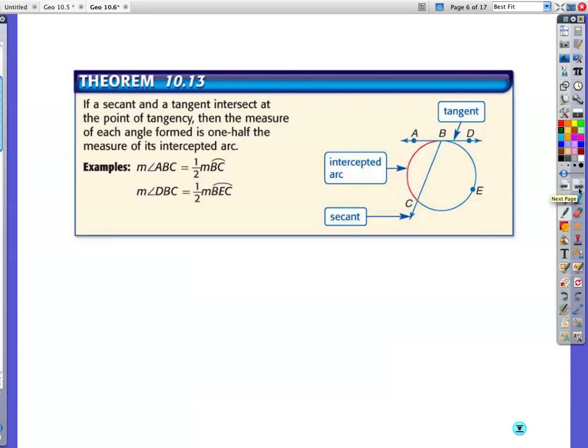New rule. I know these can be a little overbearing. If a secant and a tangent intersect to the point of tangency, then the measure of each angle form is one half the measure of an intercepted arc. So here's angle ABC. Right here. There's your angle. You're gonna take one half of this arc. If you want to figure out what angle DBC is, then you're gonna take one half of this arc right here.